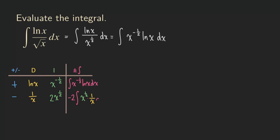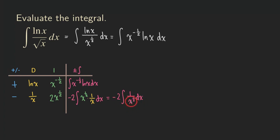We can simplify the integrand: x to the 1/2 divided by x gives us 1 over x to the 1/2, or x to the negative 1/2. We ask ourselves: can we integrate this directly? Yes — it's just a power function. Since we can integrate it directly, we stop and do not continue down the table. So we rewrite this as negative 2 times the integral of x to the negative 1/2 dx.